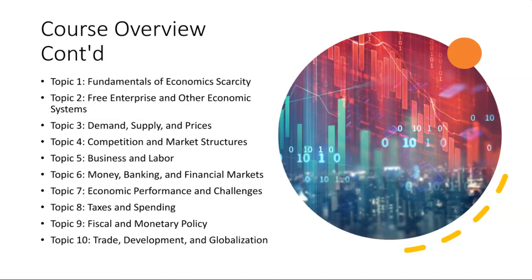Moving on to topic two, which falls from topic one, we explore economic systems. One of the most prevalent is free enterprise, where private individuals and businesses operate without significant government intervention. But there are other systems too, like socialism and communism, each with its own way of distributing resources and managing the economy.